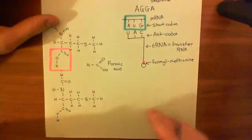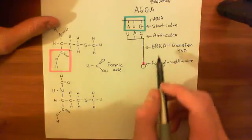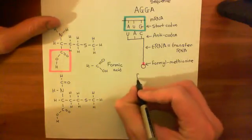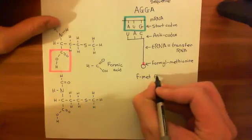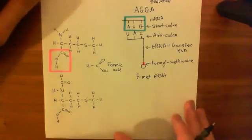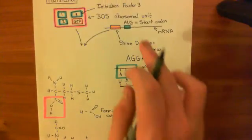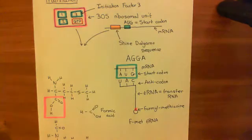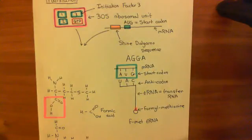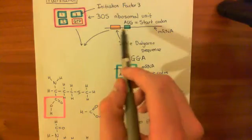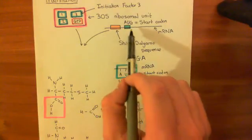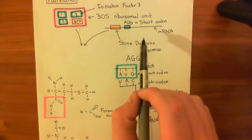That whole structure — i.e. the tRNA with this complementary anticodon to the start codon, along with the formylmethionine attached to it — is known as an fMet-tRNA, standing for formylmethionine-tRNA. What's going to happen is you're going to bind this mRNA to the 30S ribosomal subunit. When you do that, the Shine-Dalgarno sequence will bind to the 30S ribosomal subunit, and just after that the formylmethionine-tRNA will bind with the start codon of your mRNA.